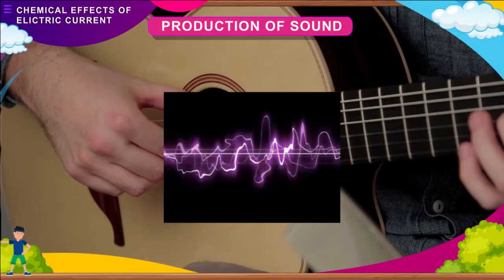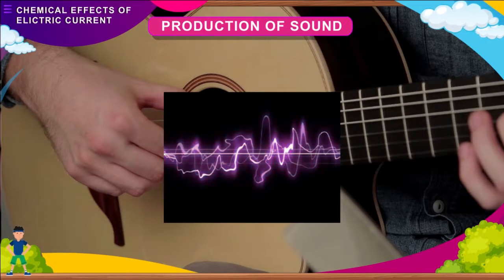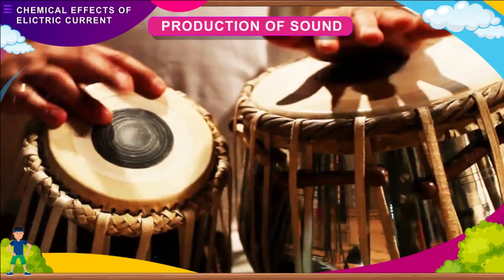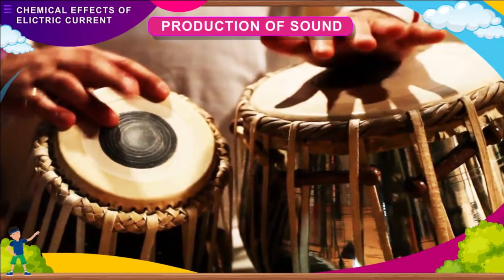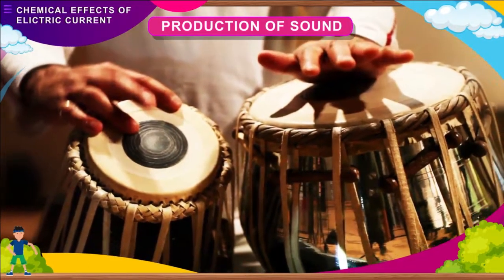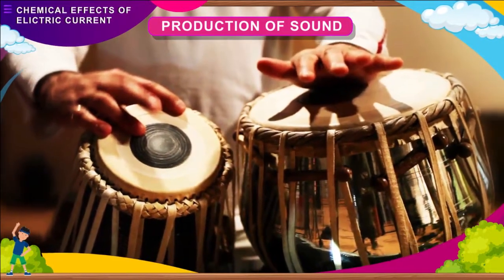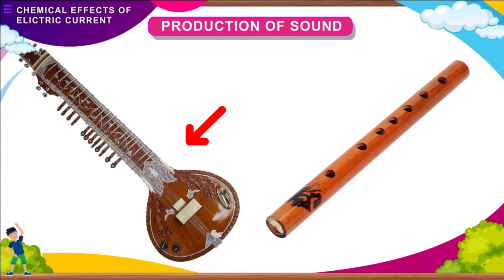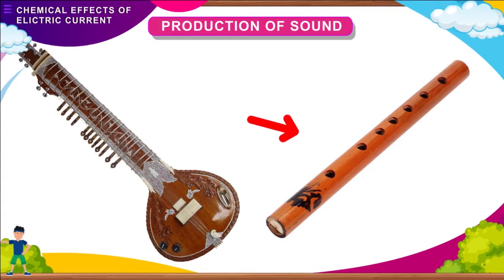There are many examples of vibrating bodies such as musical instruments. These include drum or tabla with stretched animal hide, guitar or sitar with stretched strings, and flute with an air column.